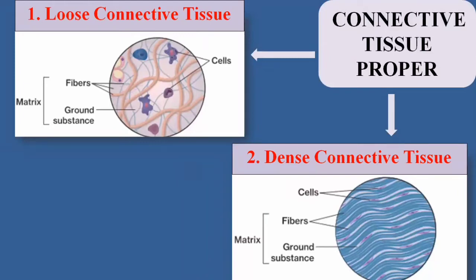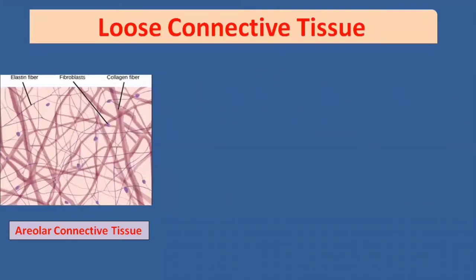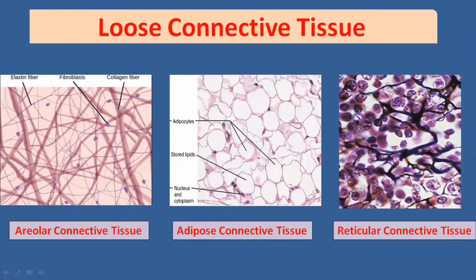Loose connective tissue and dense connective tissue are further divided into different types depending on the matrix and cells. Loose connective tissue is divided into three types: areolar connective tissue, reticular connective tissue, and adipose connective tissue. Loose connective tissue provides strength, support, and elasticity to the body.